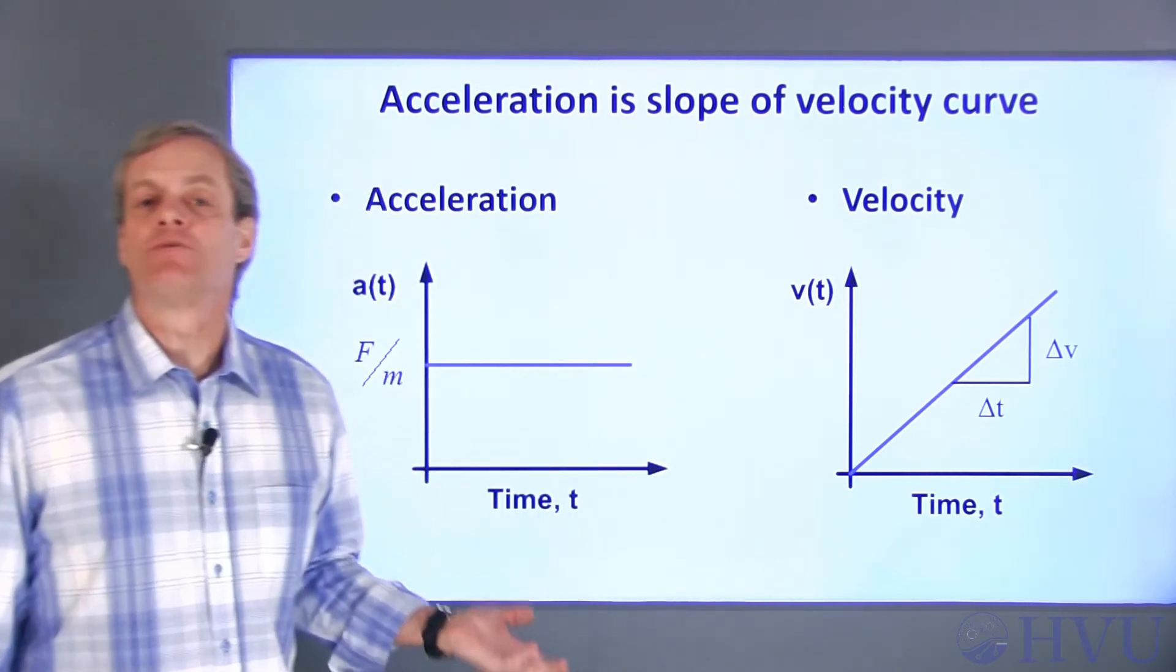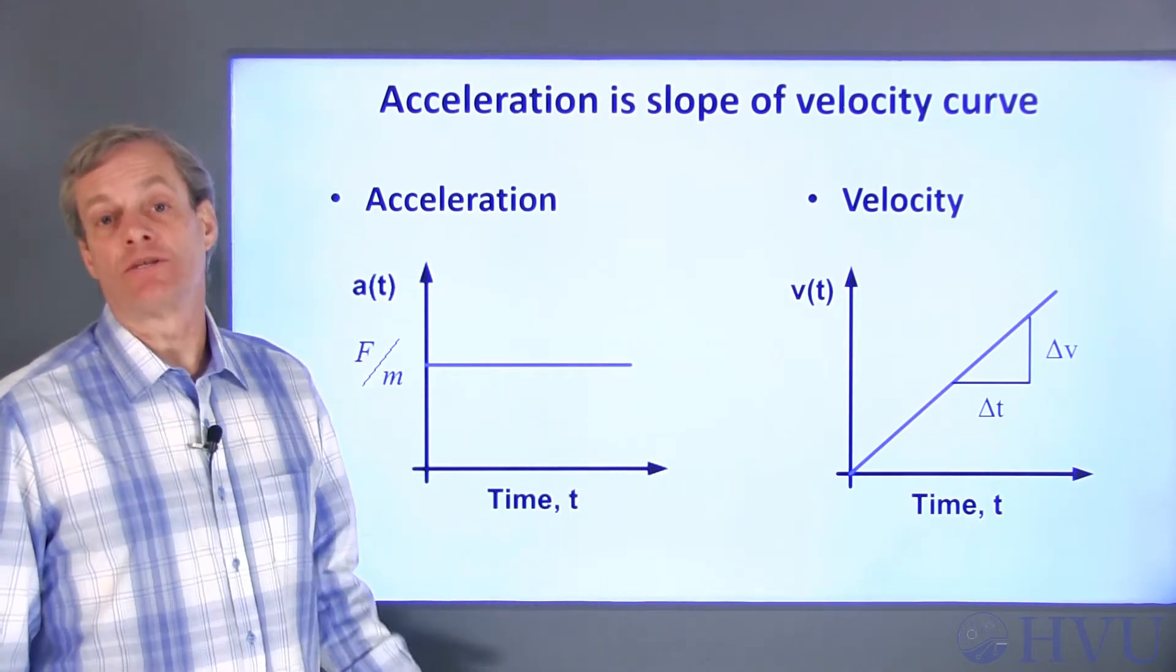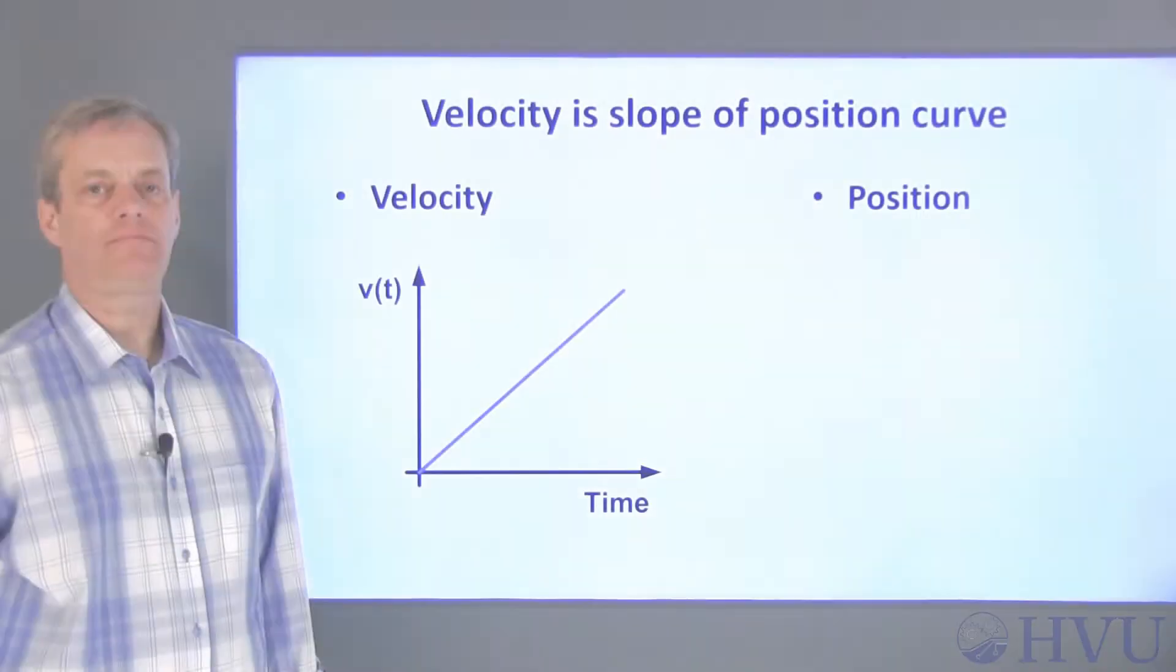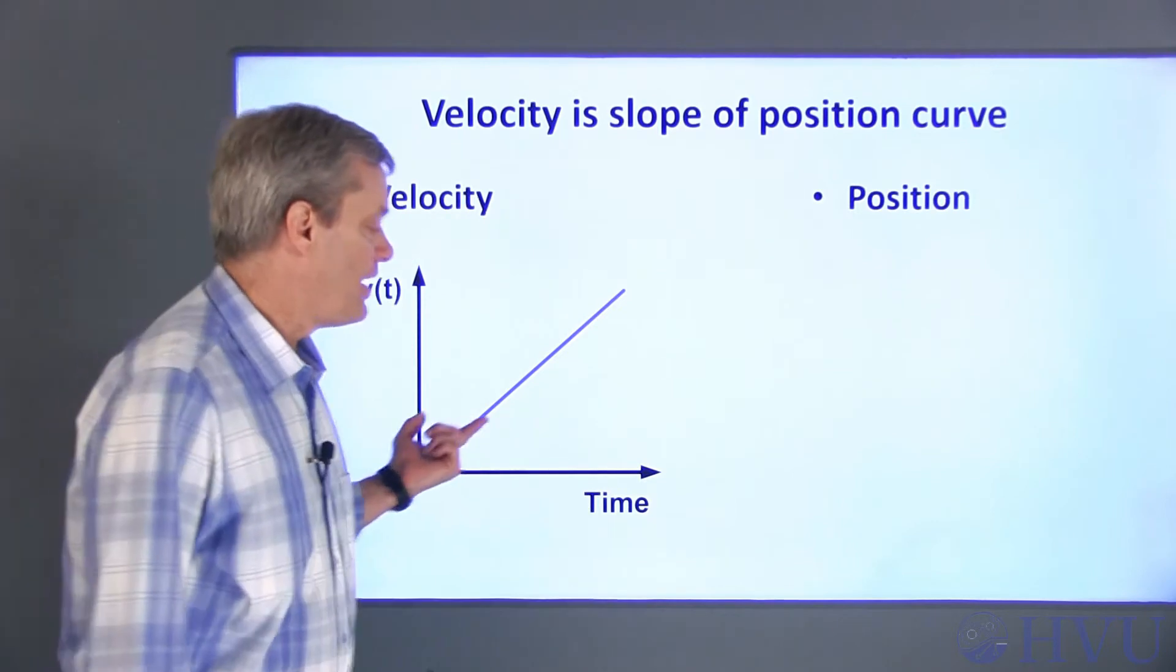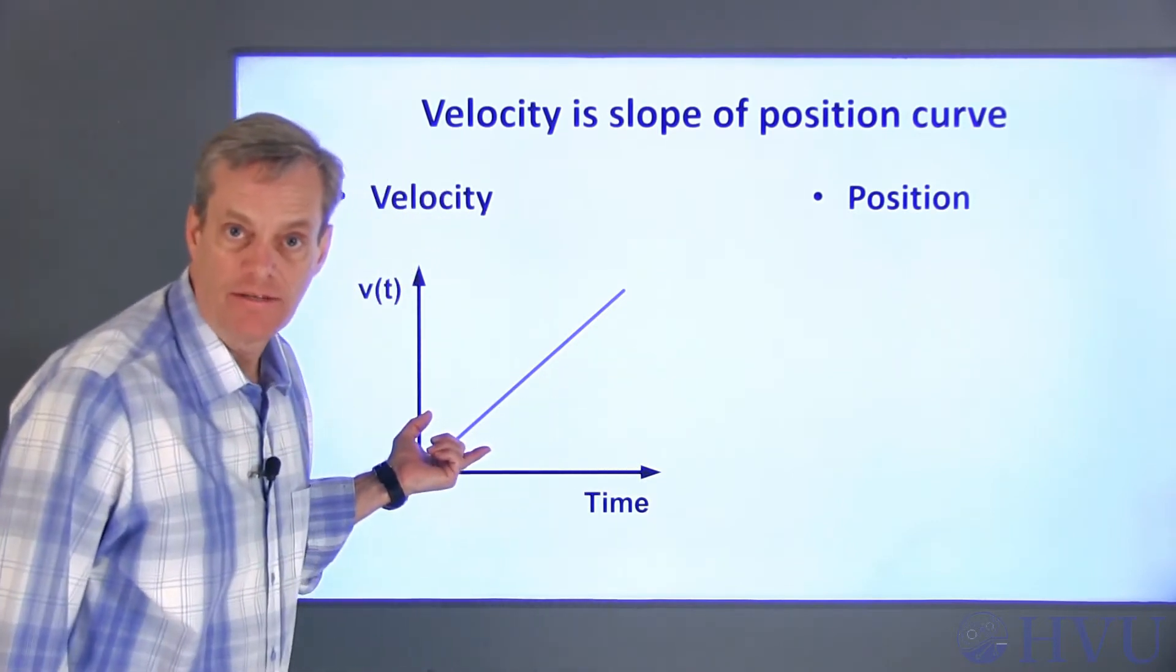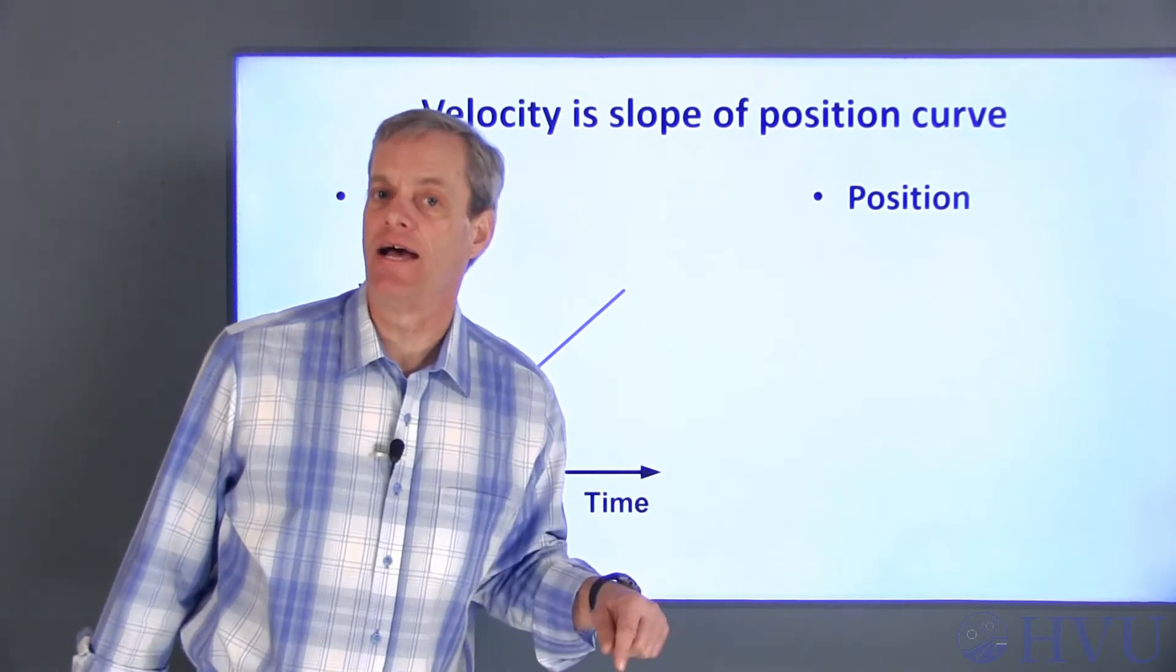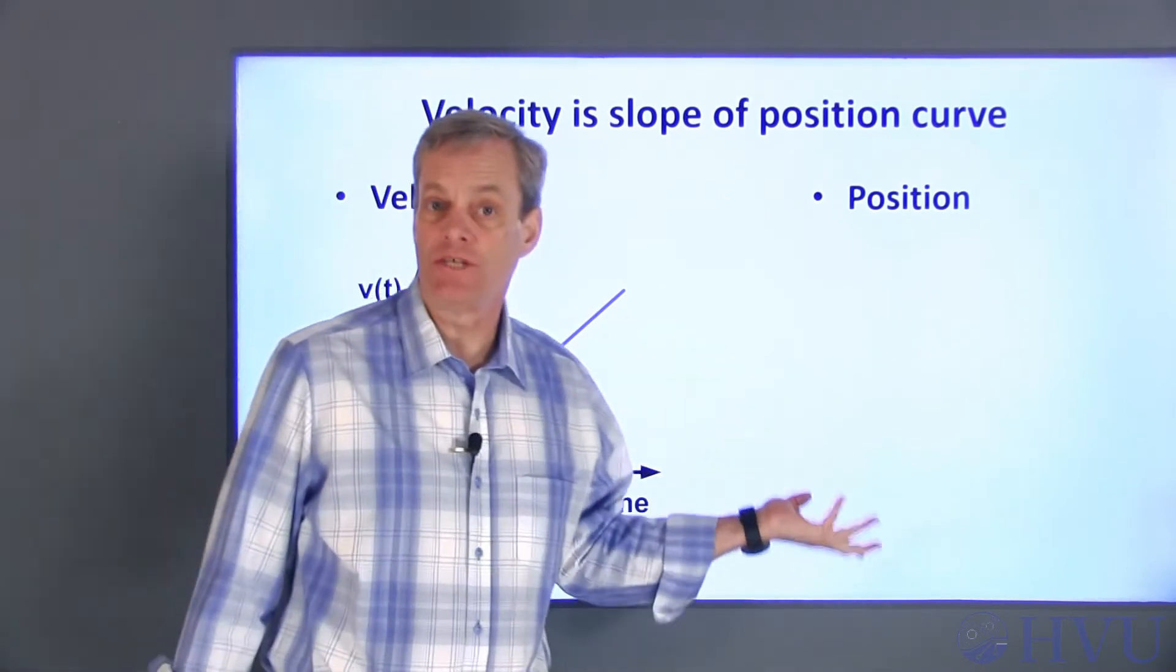Now let's see what happens when the rate starts changing with time. We can see this by looking at the cart's position, or how far the cart's moved. We've already seen that, for a constant force, the velocity increases at a constant rate. The velocity is the rate of change of position with time. So the value of velocity here will give the slope of the position curve.